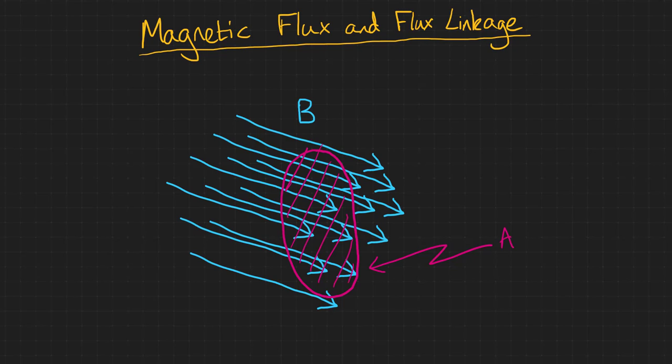In a previous video I introduced the term magnetic flux density, symbol B, as the strength of a magnetic field. It effectively tells us how many magnetic field lines are passing through each square metre.